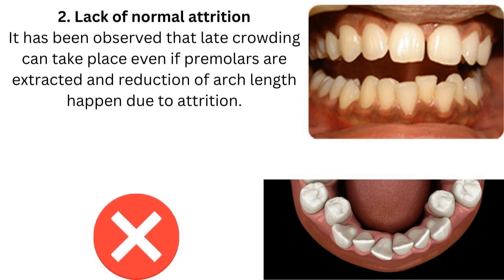The second theory is lack of normal attrition of the teeth. It has been observed that late crowding can take place even if you extract the premolars, and the reduction of the arch length happens due to this normal attrition. So this is also a false theory.